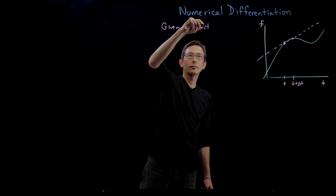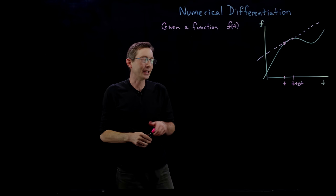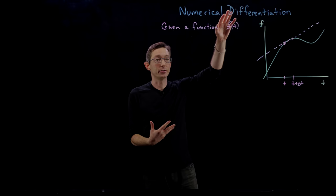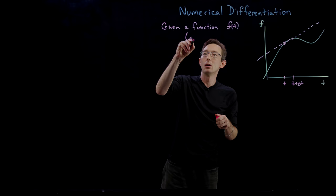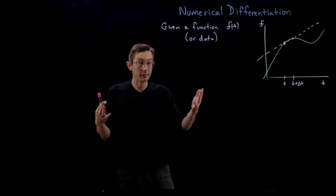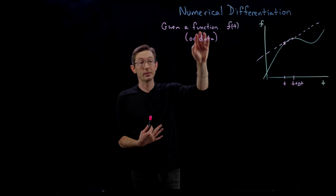Given a function f of t — and everything I'm going to tell you today doesn't only apply to functions, it also applies if you want to take the numerical derivative of a data set. If I have measurements of some system in time and I want to approximate the derivative from that measurement data, that also works. Data science is becoming a huge part of all of science. If you want a job in industry, oftentimes you're going to be doing numerical differentiation not on functions, but on actual raw measurement data.